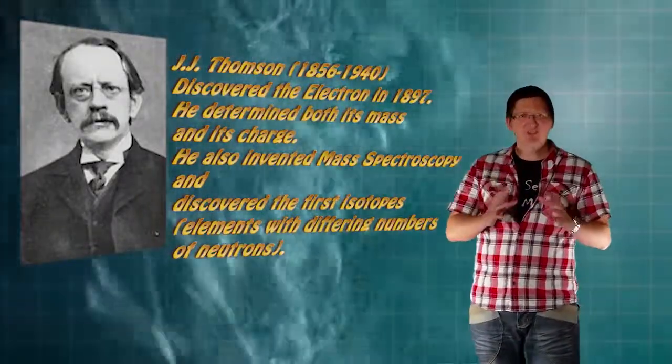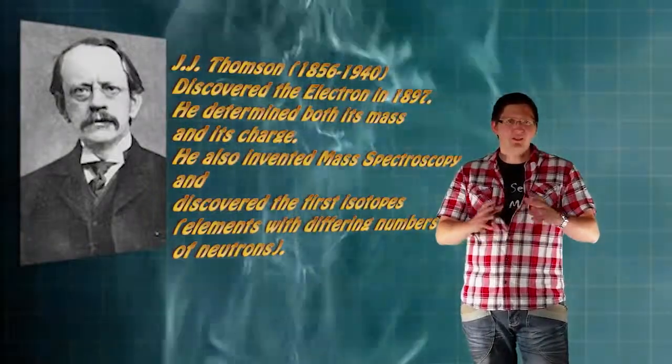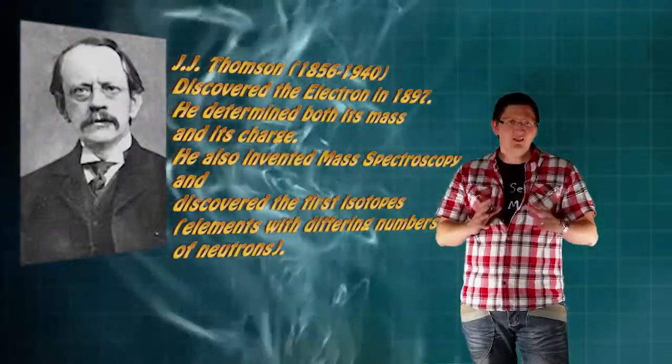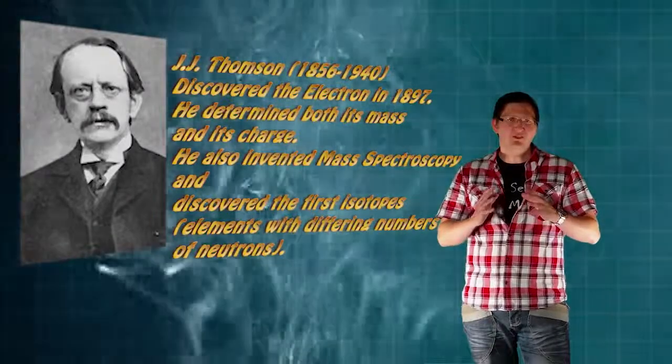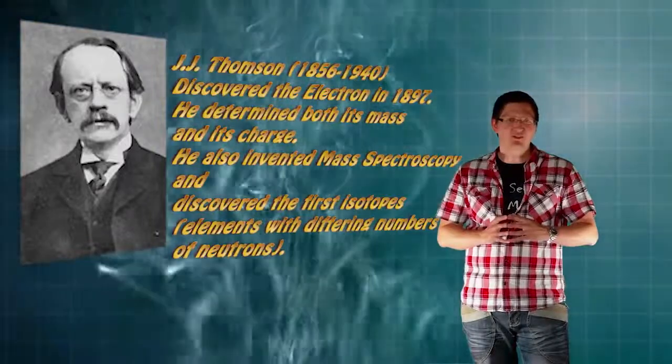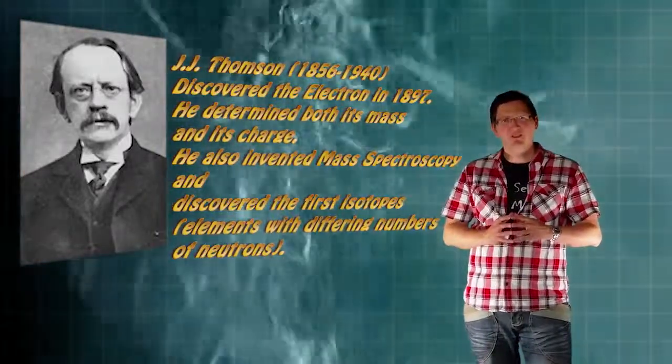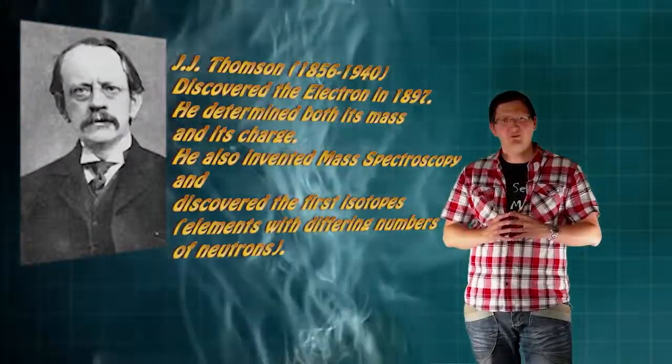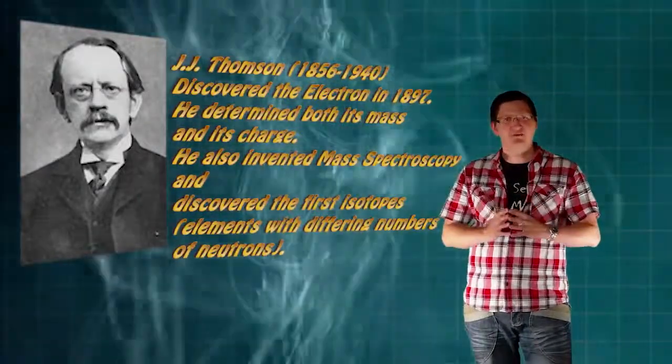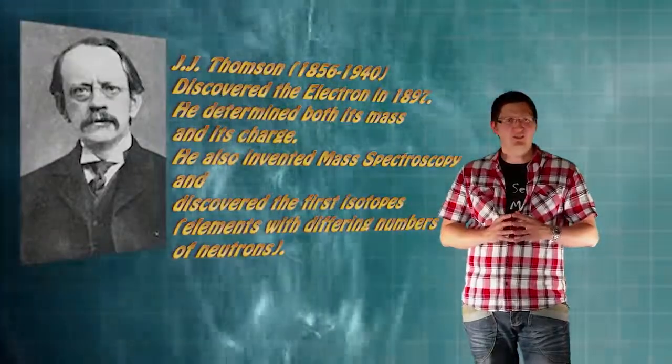He was able to determine that these particles that were emitted were actually fundamental particles of atoms. So at this point in time, which he named these particles corpuscles by the way. At this moment in time, he was able to cut the atom. So from 400 BC with Democritus coming up with the theory that all things are made out of atoms, J.J. Thomson was able to cut the atom for the first time and show that the atom was actually cuttable.